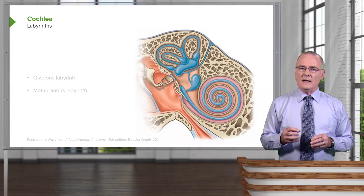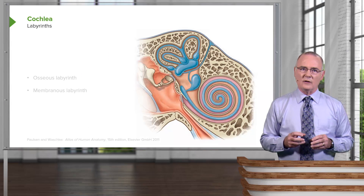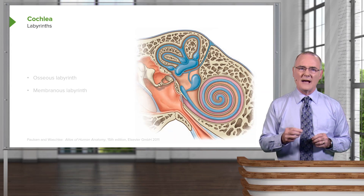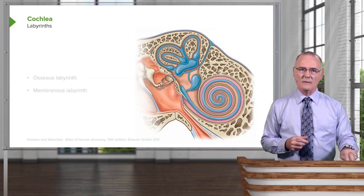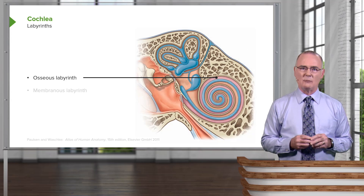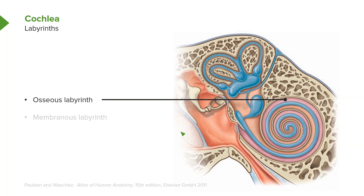The first thing to know about the cochlea is that it has two labyrinths. One of these is the osseous labyrinth. The bony canal of the cochlea runs along and through here — here is the outer bony wall as it spirals internally within the inner ear, and here is the other side of that bony canal that coils within the inner ear.